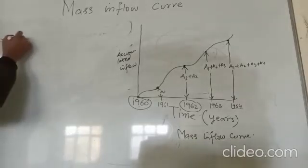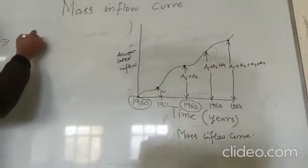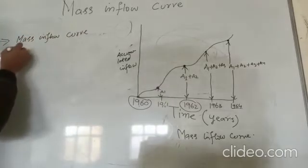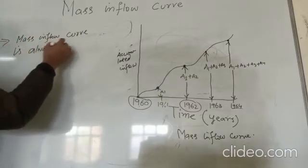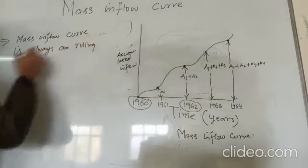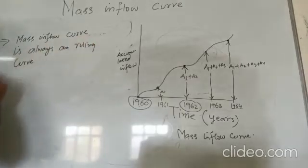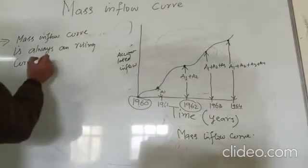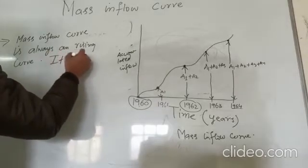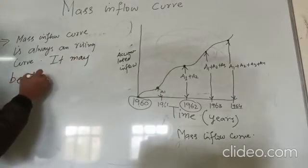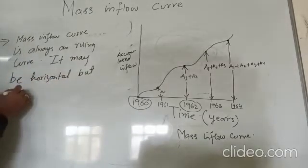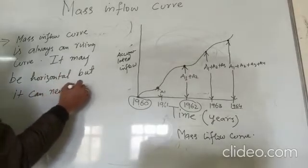After plotting, the mass inflow curve is always rising. It may be horizontal at times, but it can never fall down — never fall down.